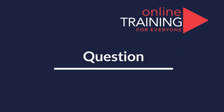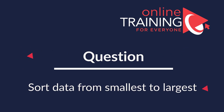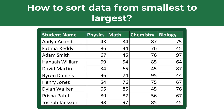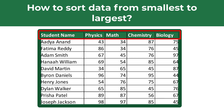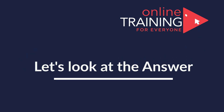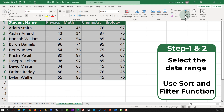A lot of times you might get a question on how to sort data in Excel from smallest to largest. For example, you might be presented with a data set showing student names and their grades in physics, math, chemistry, and biology. We need to sort this data set based on the student names. To accomplish this, select the data set and in the Home tab navigate to Sort & Filter and select Sort A to Z.